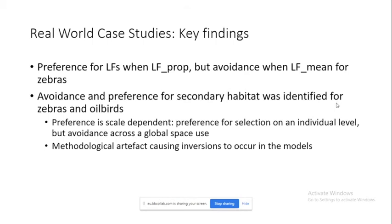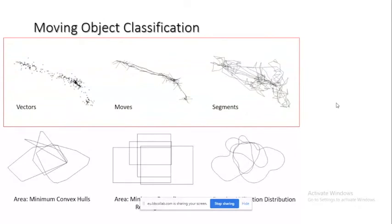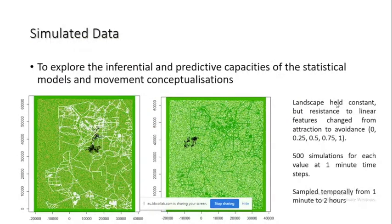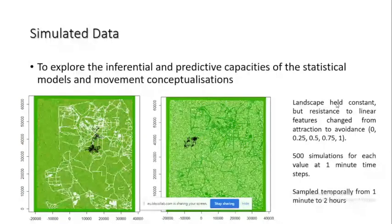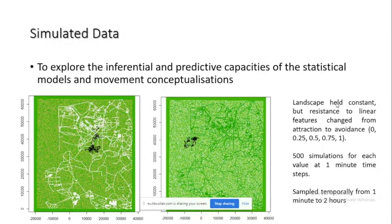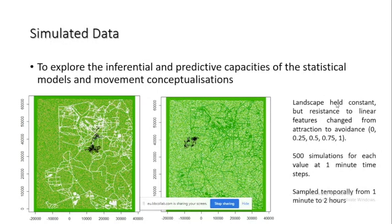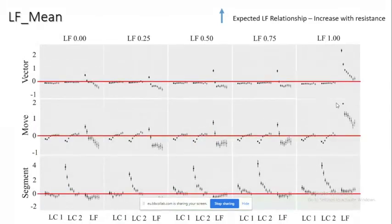But also found this coefficient inversion preference for linear features when represented as different methods, as well as for the secondary habitat. So preference for secondary habitat as well as avoidance. This is most likely a result of scale dependency in the data - preference for selection at an individual location over other less suitable habitat, but avoidance of that habitat when considered across the entire global model, particularly in relation to its preferred habitat. So that led me to say, well, what's going on here? We're getting a lot of inversions. We're not actually doing it that well. So I focused in on vectors, moves and segments and simulated some data. I wanted to explore inferential and predictive capacities of these models and these conceptualizations.